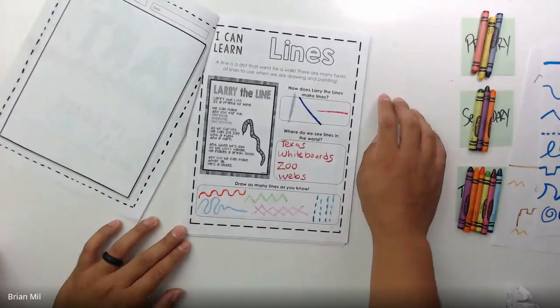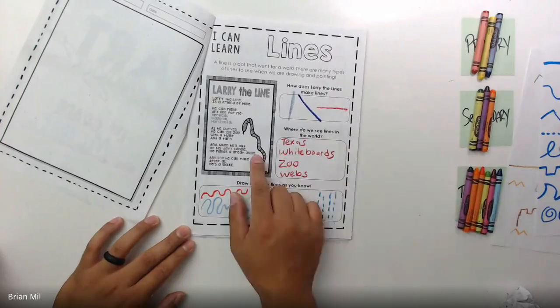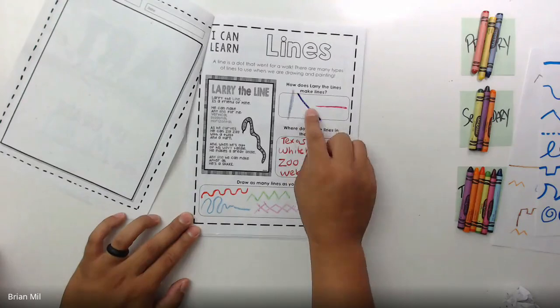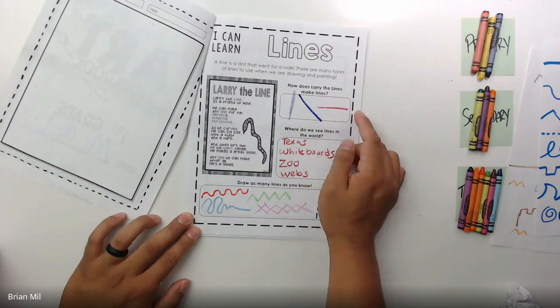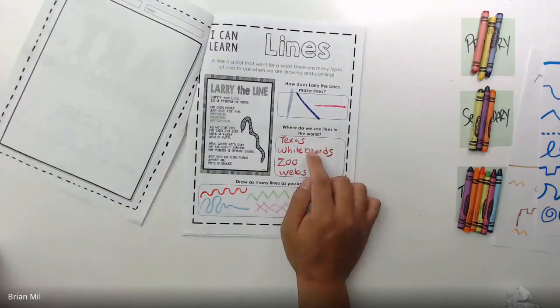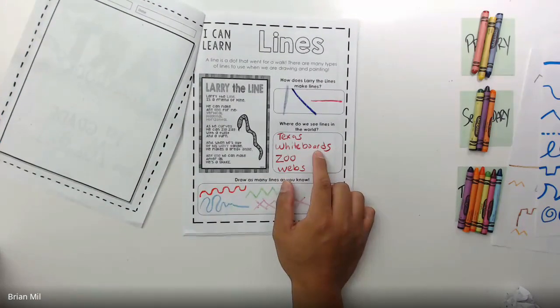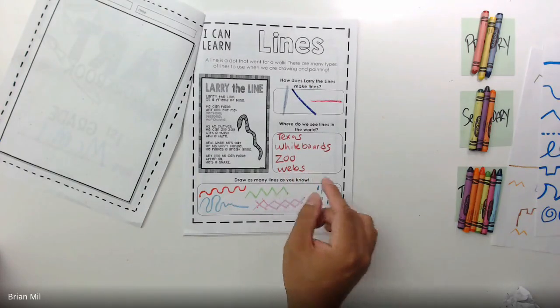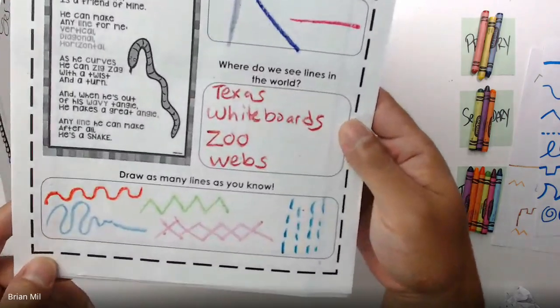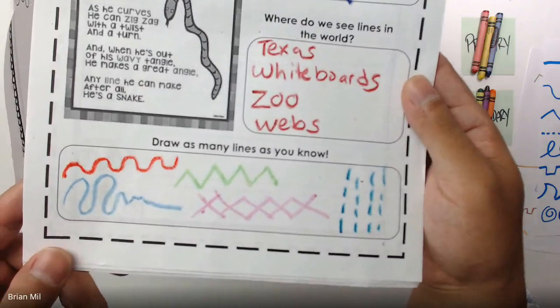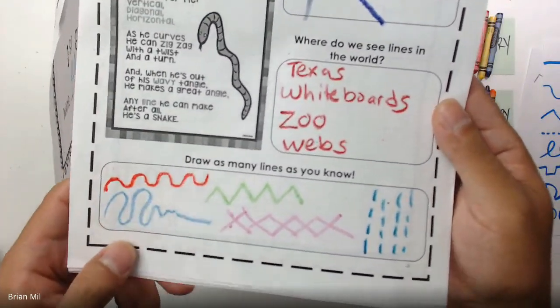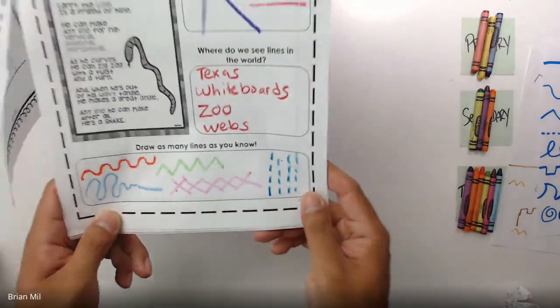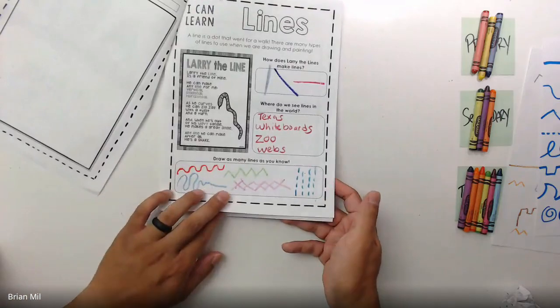If we open up to the first page, we can see what we've been working on. We talked about the element of art of lines. We talked about how Blary the snake moves - up and down, diagonal, and horizontal. We talked about where do we see lines in the world. Someone said Texas, another person said whiteboards, someone said zoo, and another person said webs, which is great.